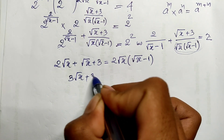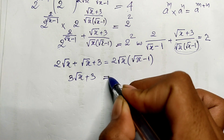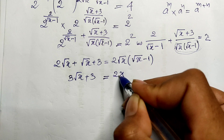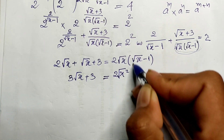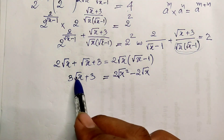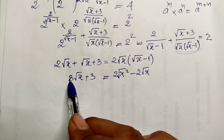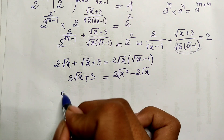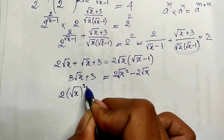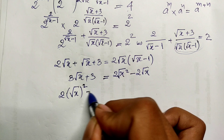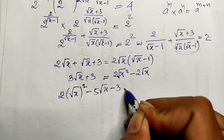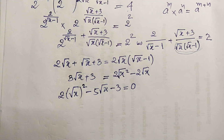Expanding, I get 3 times square root of h plus 3 equals 2h minus 2 times square root of h. Rearranging, we get 2h minus 5 times square root of h minus 3 equals zero.